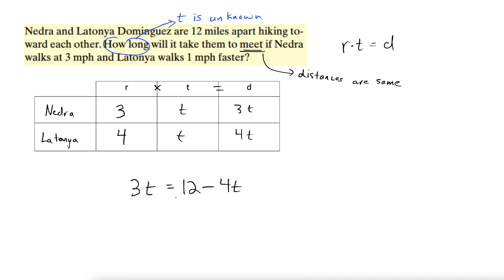And that will work for these problems where people are starting apart and coming towards each other. Well, we can solve it from there. Plus 4T, plus 4T, 7T equals 12, which tells us that T is 12 sevenths. 12 sevenths hours.